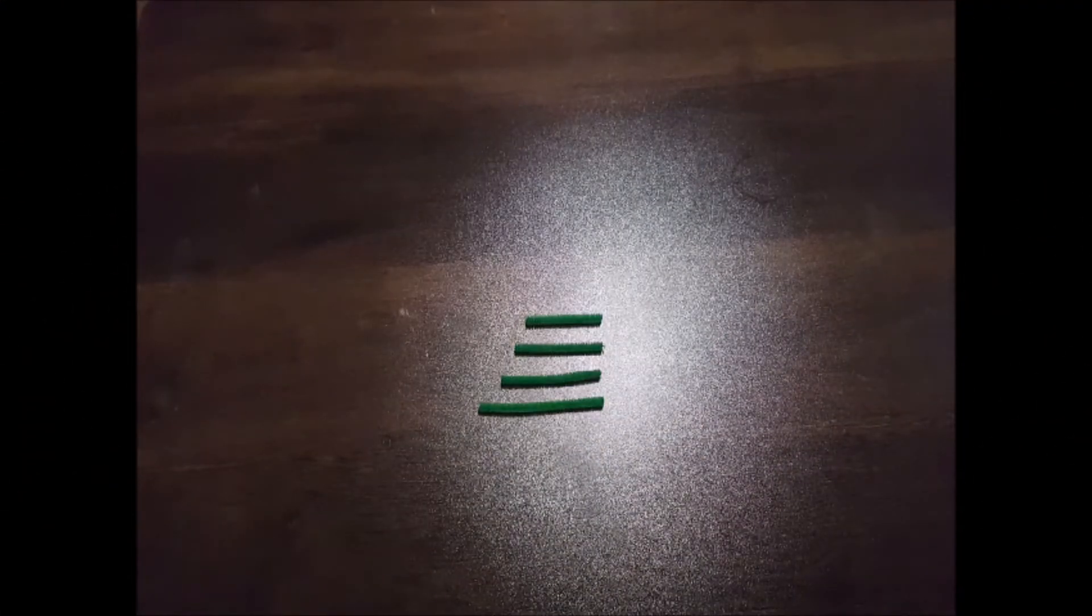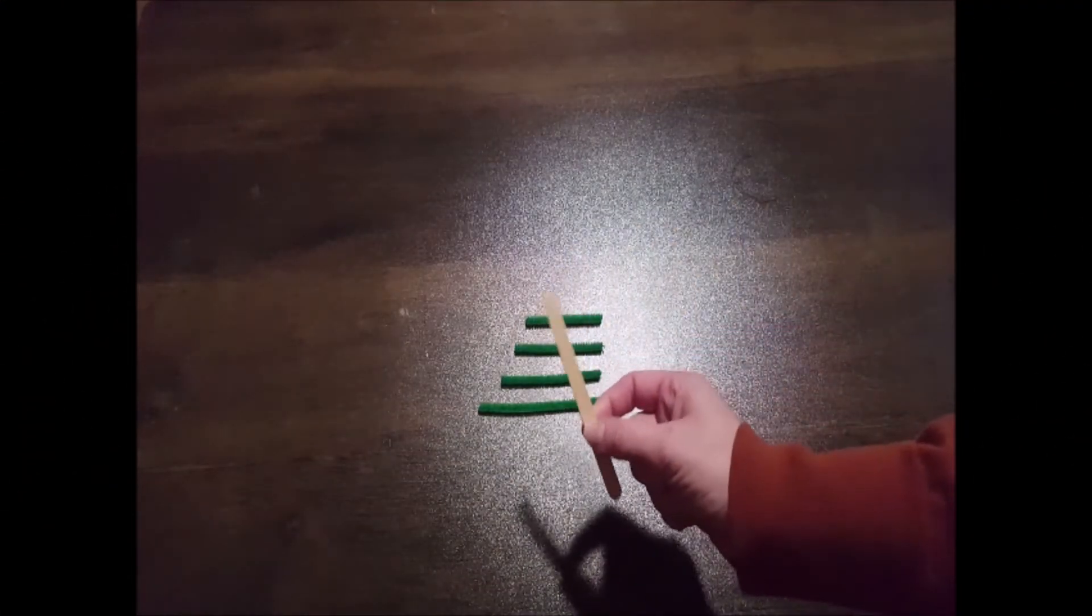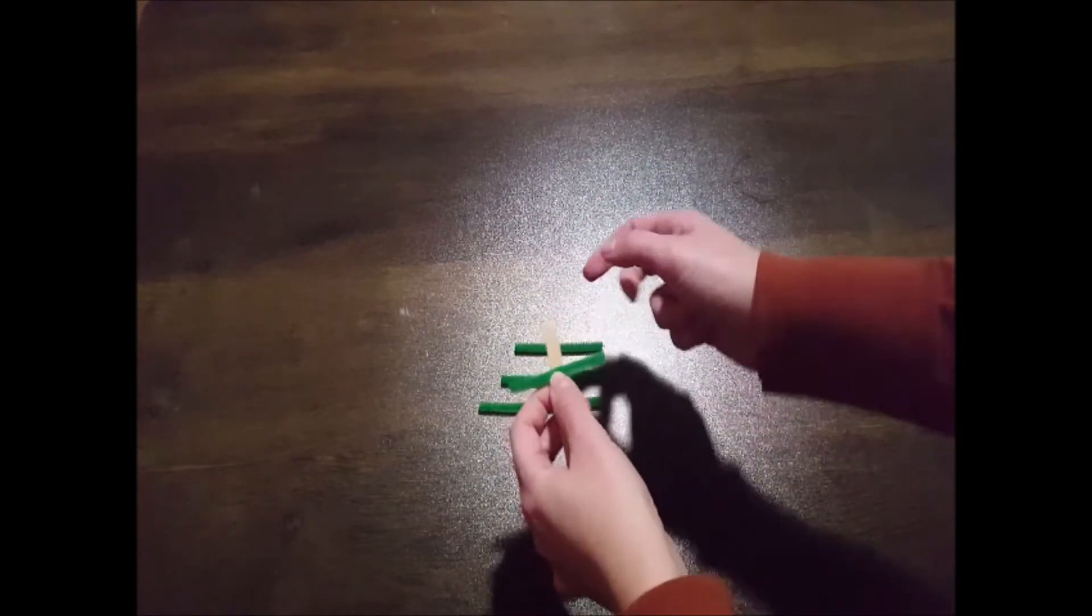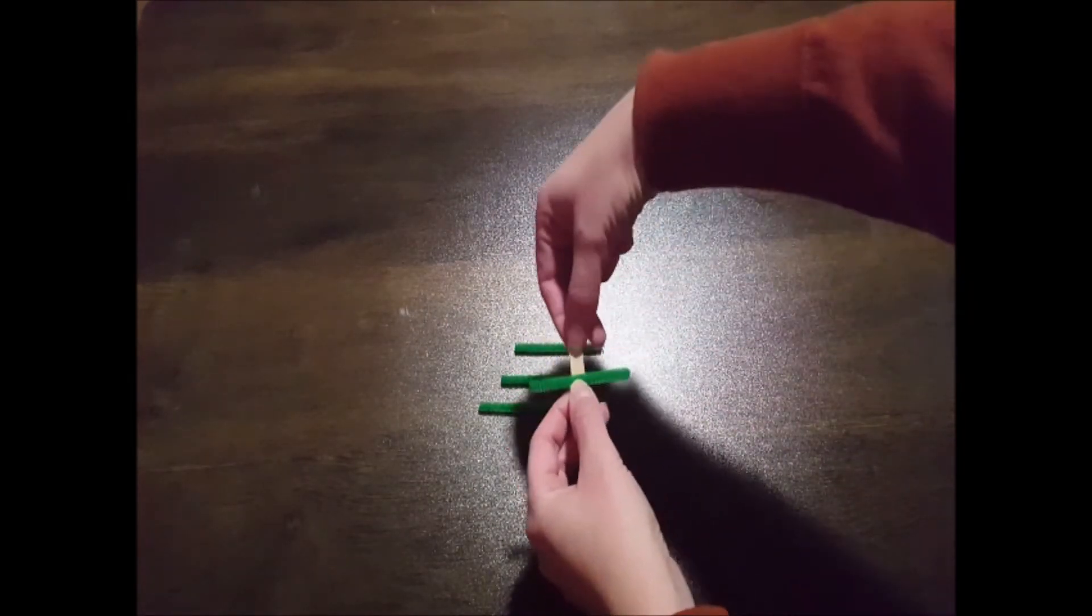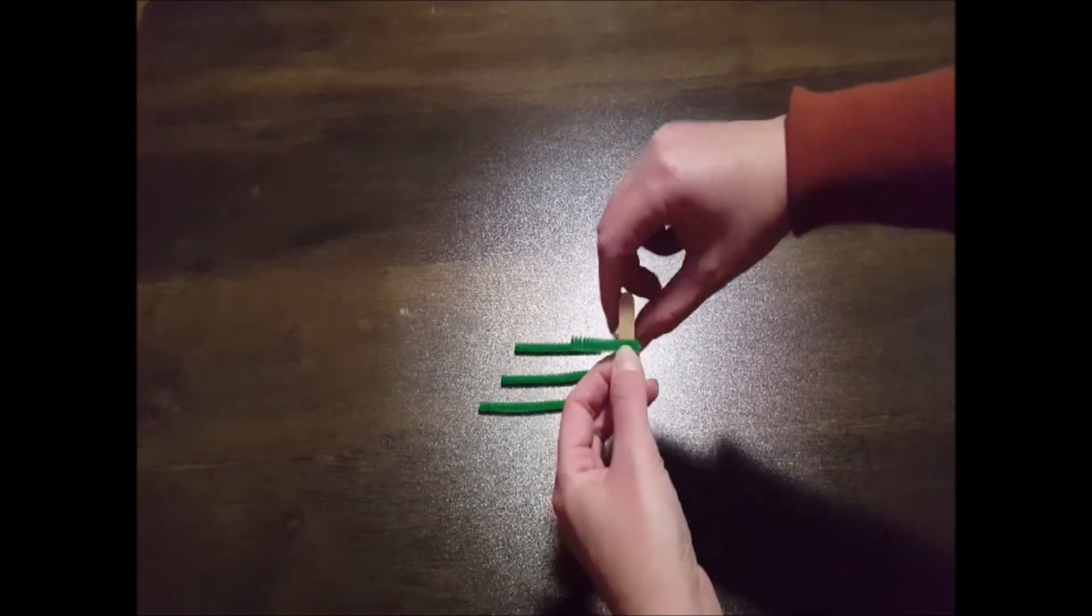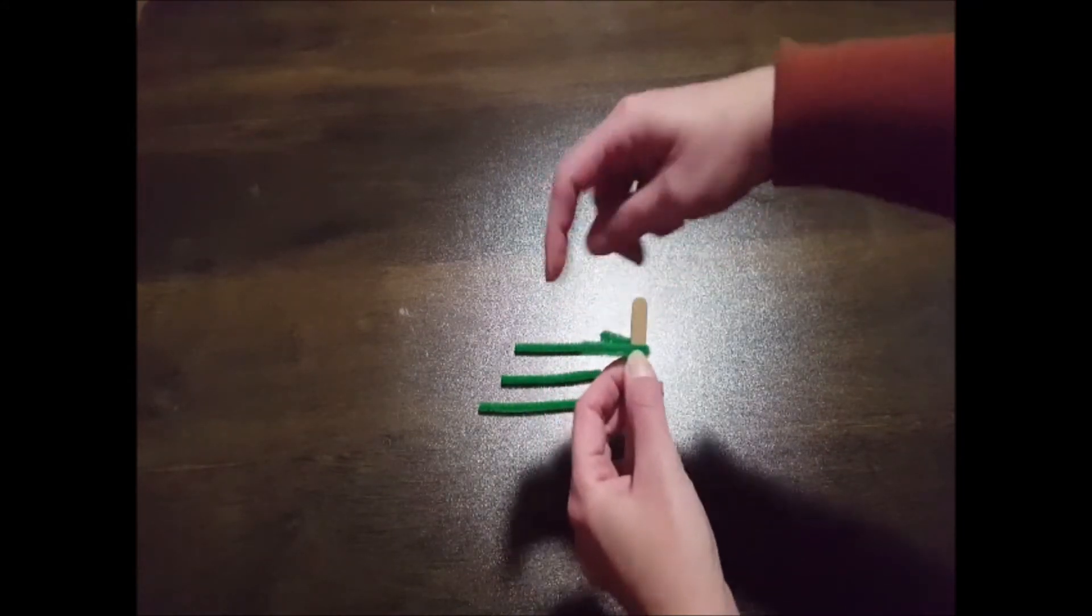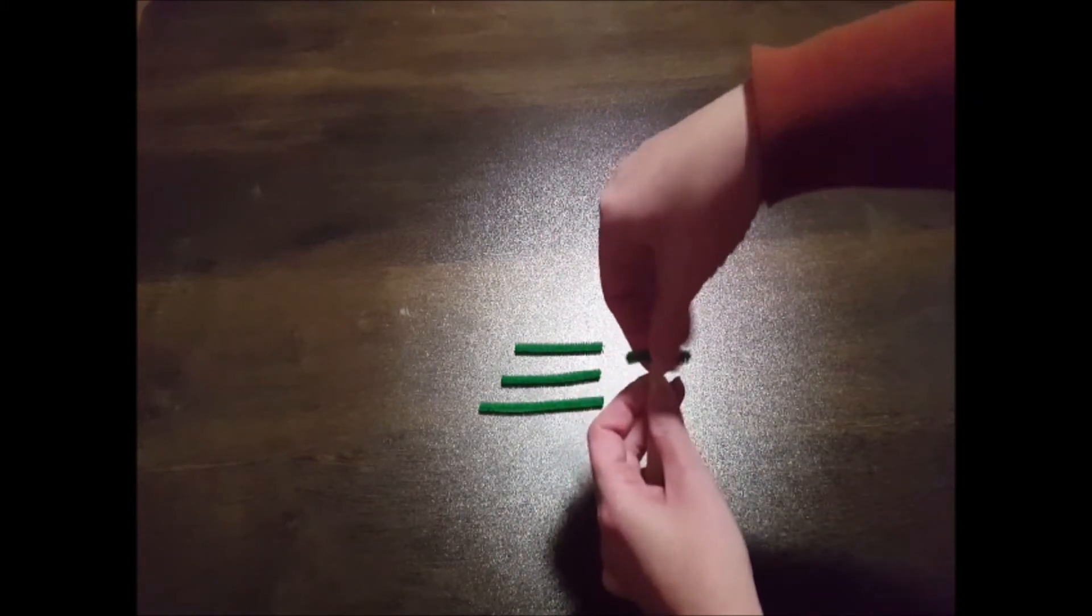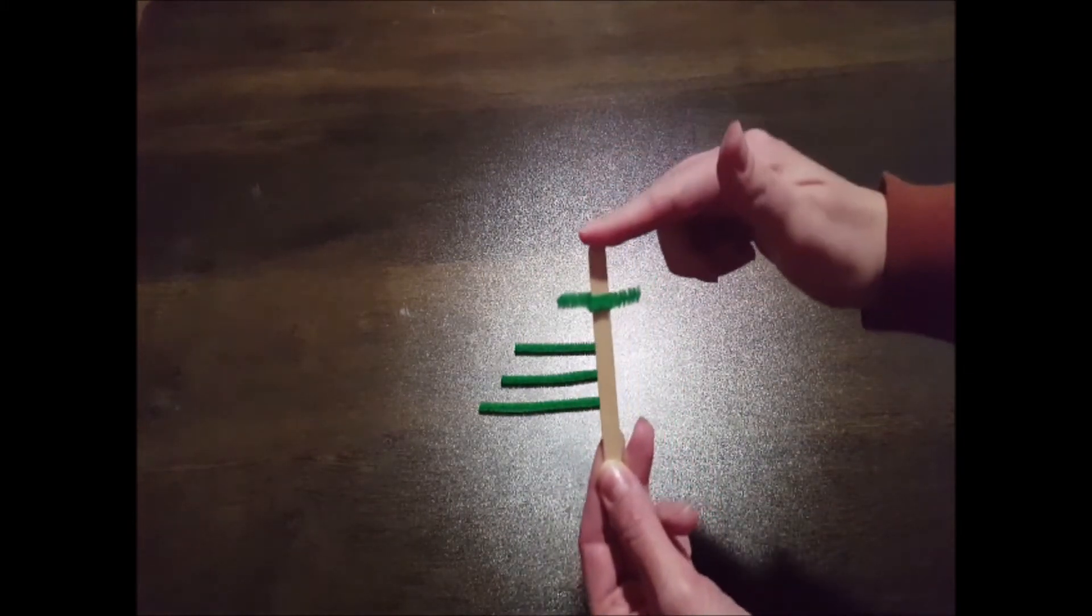Now we're ready to start wrapping our pieces of pipe cleaner around our craft stick. We're going to start at the very top with the smallest piece, and we're simply going to wrap it around in both directions. We want it to be centered, and we want the different sides to be even and straight.